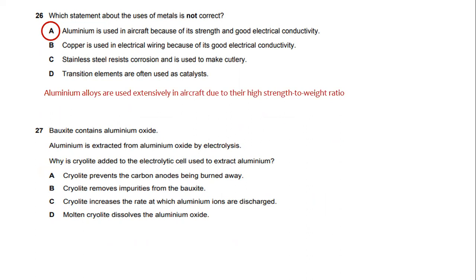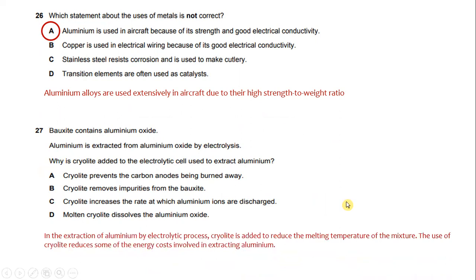Number 27. Bauxite contains aluminum oxide. Aluminum is extracted from aluminum oxide by electrolysis. Why is cryolite added to the electrolytic cells used to extract aluminum? In the extraction of aluminum by electrolysis, cryolite is added to reduce the melting temperature of the mixture. The use of cryolite reduces some of the energy costs involved in extracting aluminum. So the answer is: molten cryolite dissolves the aluminum oxide.